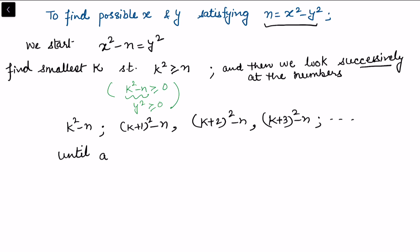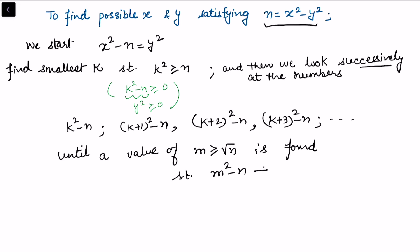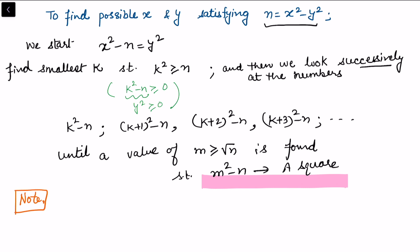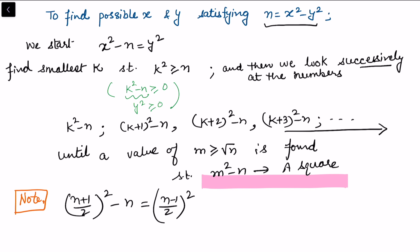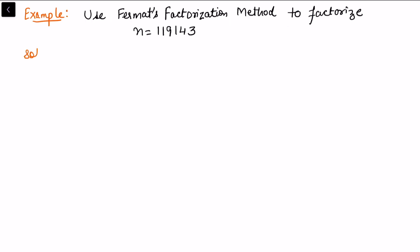This process continues until we find a value m ≥ √n such that m² − n is a perfect square. The sequence doesn't go to infinity because ((n+1)/2)² − n = ((n−1)/2)², so starting from (n+1)/2 we always get a perfect square. The sequence will therefore terminate in a finite number of iterations.